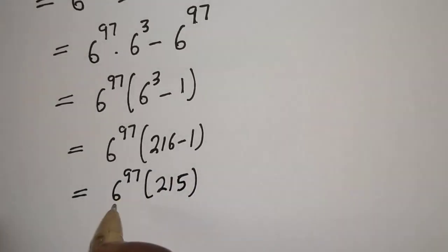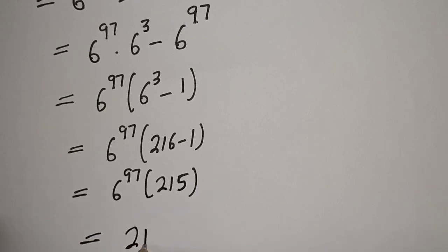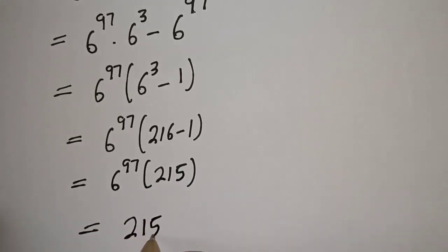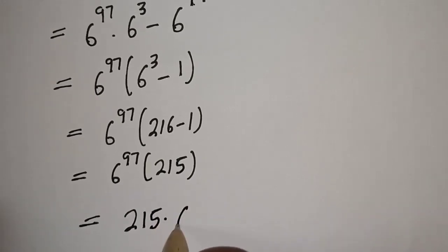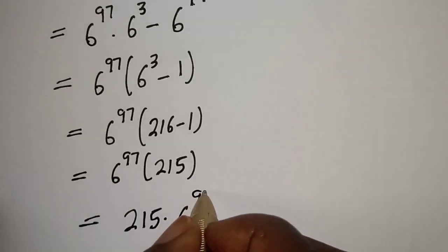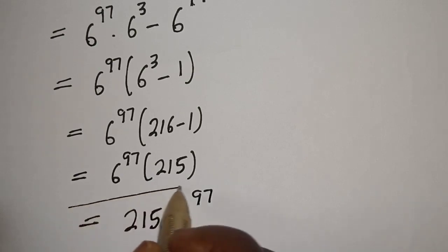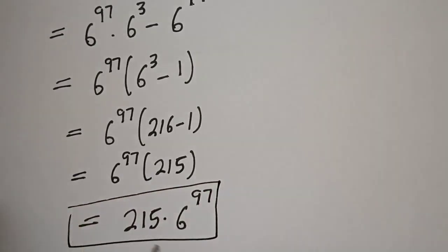Therefore this can be written as 215 multiplied by 6 raised to power 97. And this is the final answer.